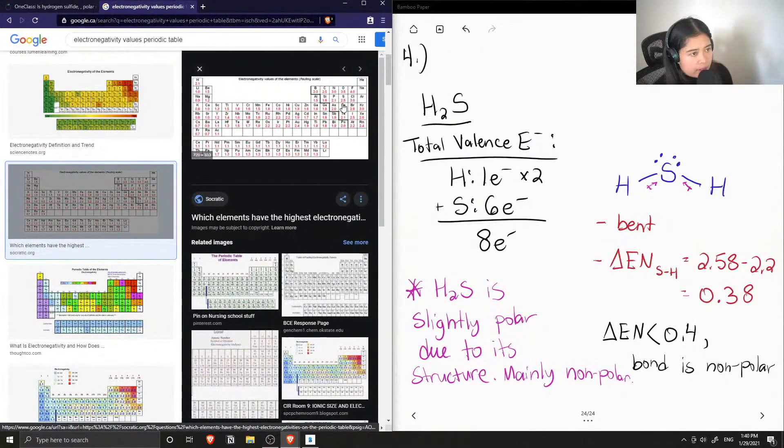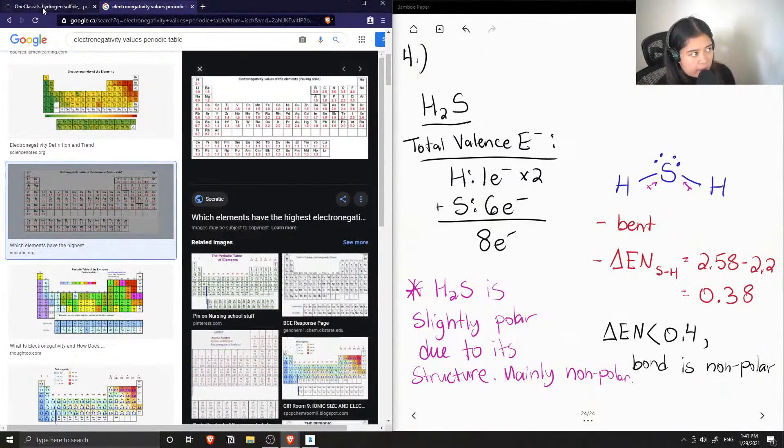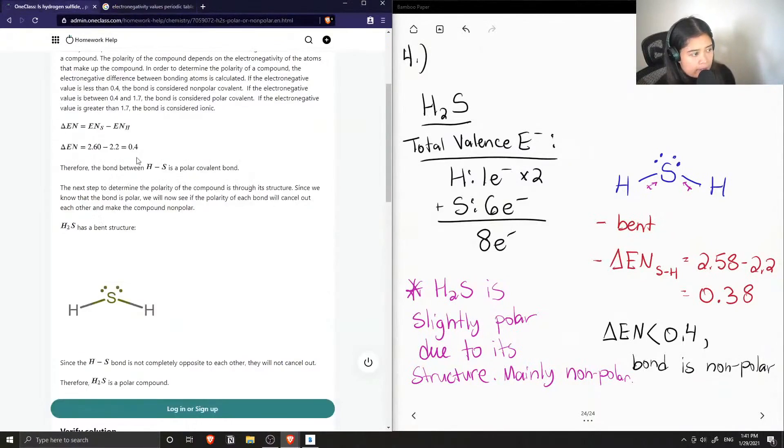So again this is why it's up for debate, because if we consider the carbon hydrogen bond, the carbon hydrogen bond everyone knows is nonpolar, and it would have the same electronegativity difference as 0.4, which is the same as the hydrogen sulfur bond.